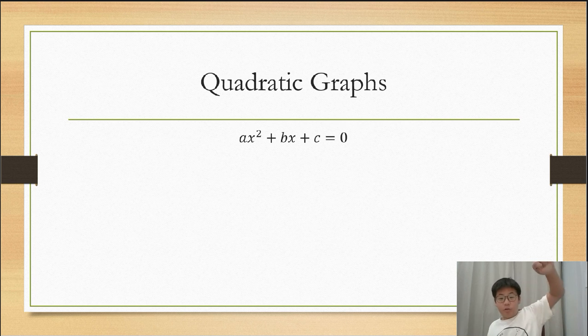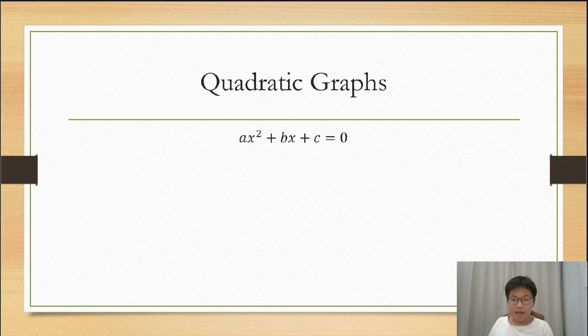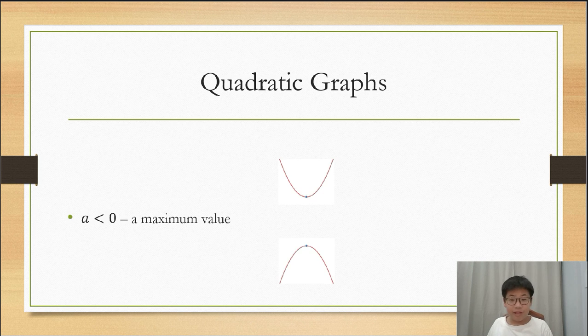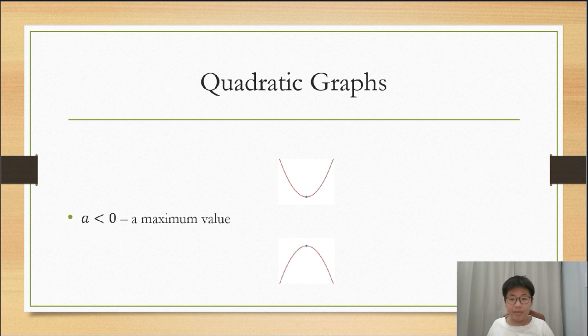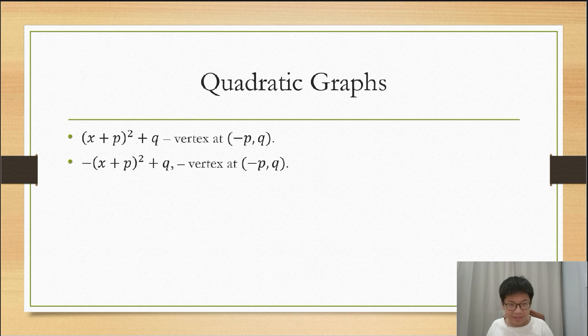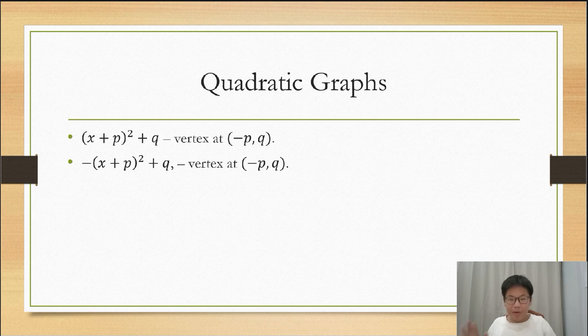Moving on to quadratic graphs! Let the equation be ax² plus bx plus c equals 0. There are a lot of ways we can graph this. If a is greater than 0, then the curve looks like a U and has a minimum value. If a is less than 0, then the curve looks like an upside down U and has a maximum value. Why is this not working? My slide's not cooperating. Sorry, there was a small technical error in the making of the slides.